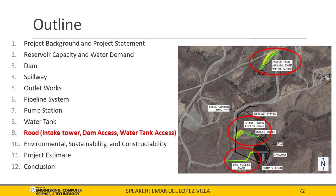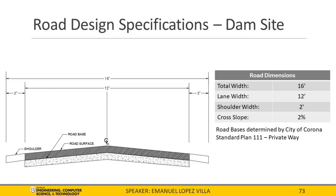There are three roads designed in this project. The first is the dam access road, located north of Eagle Canyon Road, allowing access to the top of the dam. The second is the water tank access road, also north of Eagle Canyon Road. The third is the intake tower access road, located next to Eagle Canyon Road. In Civil 3D road design, an assembly is first created, essentially a cross-section of the road, defining lane width, total width, shoulder width, and cross slope. Road bases were determined by City of Corona Standard Plan 111 Private Way, with a total width of 16 feet, lane width of 12 feet, shoulder width of 2 feet, cross slope of 2%, and a cut-and-fill slope of 2-to-1 per federal design standards.